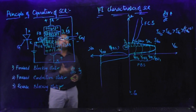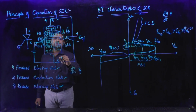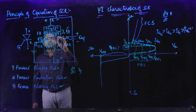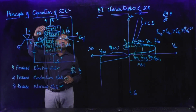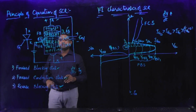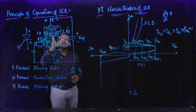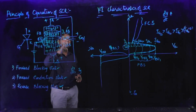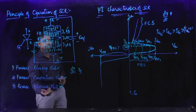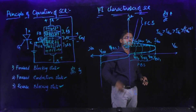During reverse bias, whenever cathode is made positive with respect to anode — or cathode is connected to higher potential with respect to anode — the device will be under reverse bias condition. When the device is under reverse bias, junctions J1 and J3 are reverse biased and J2 is forward biased. There is no current flowing through the device because of the reverse bias across J1 and J3, so that reverse bias condition state is called the reverse blocking state.